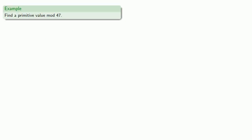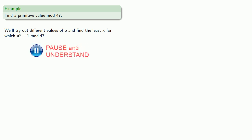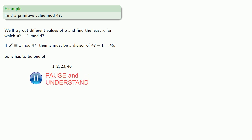Let's find a primitive value mod 47. We want a number whose least power congruent to 1 is going to be 46. We'll try out different values of a and find the least x for which a to power x is congruent to 1 mod 47. If a to power x is congruent to 1 mod 47, then x must be a divisor of 47 minus 1, which is 46. To have a primitive root, we just need to make sure that the least power is not 1, 2, or 23.